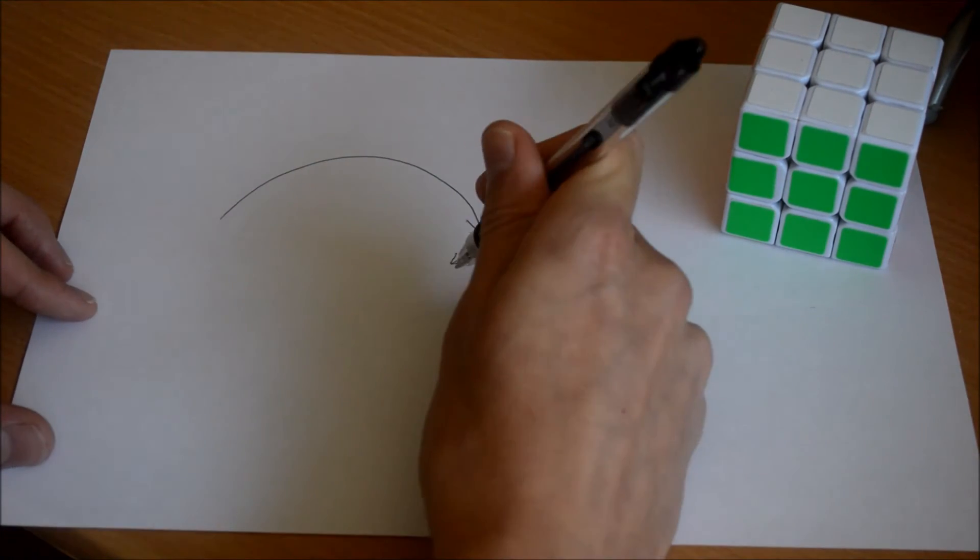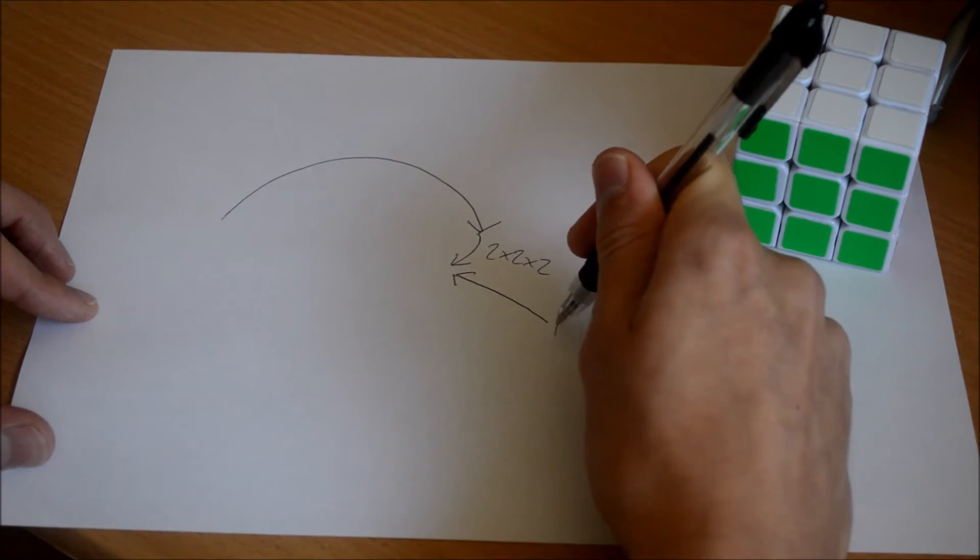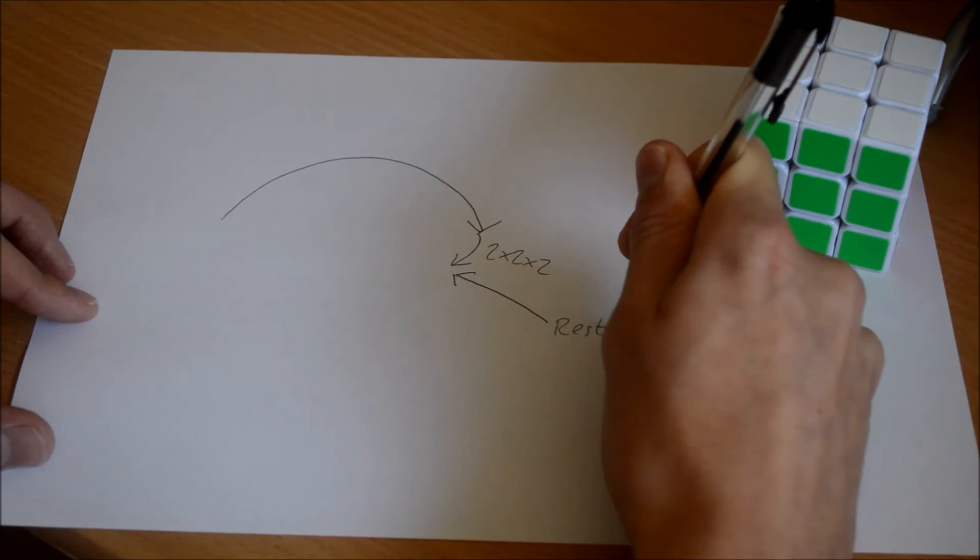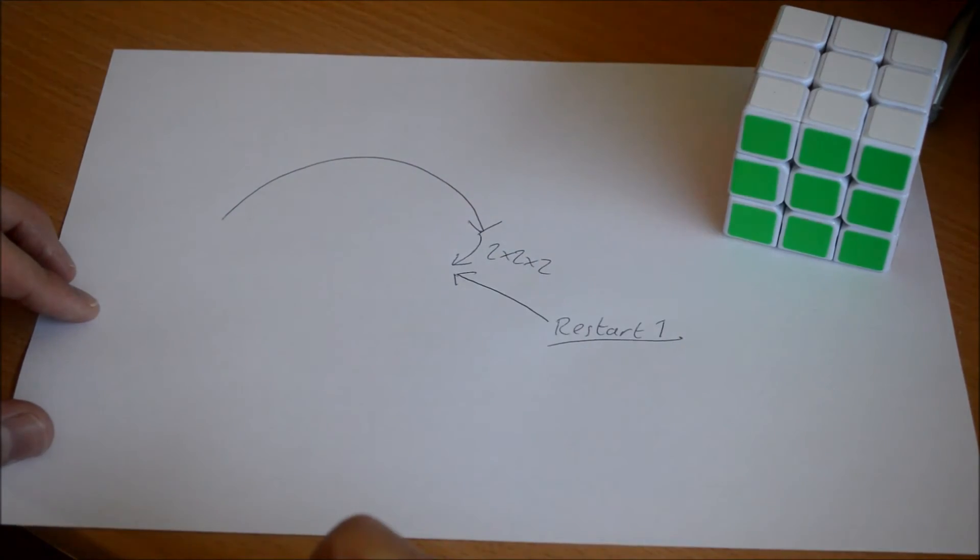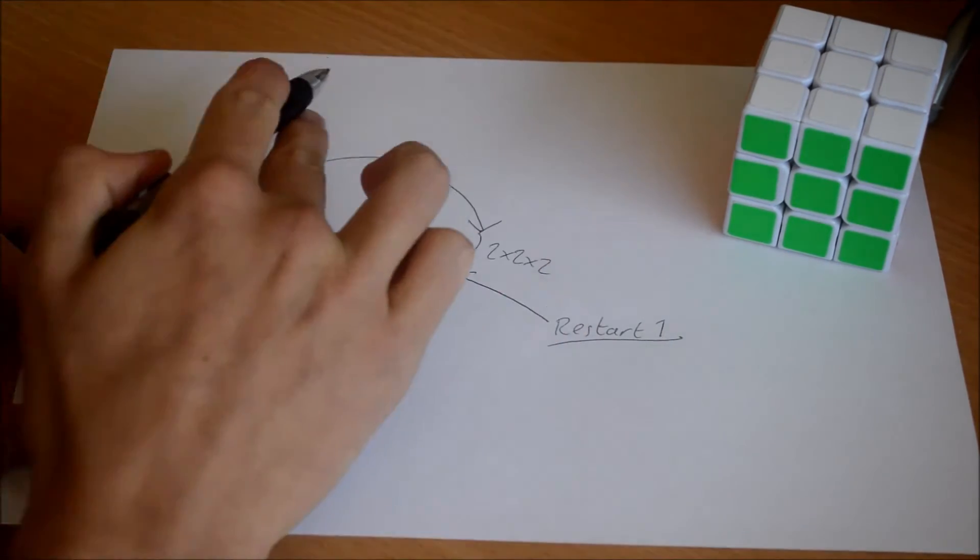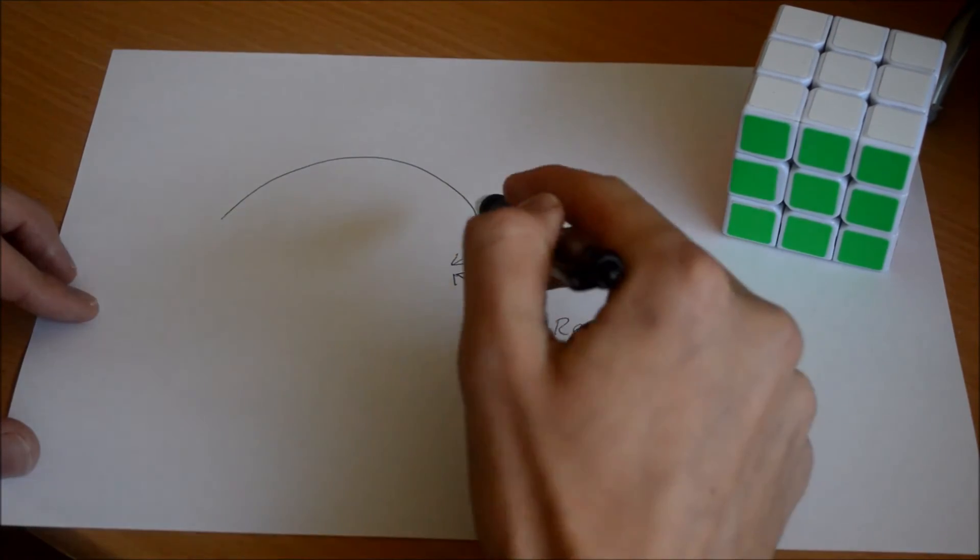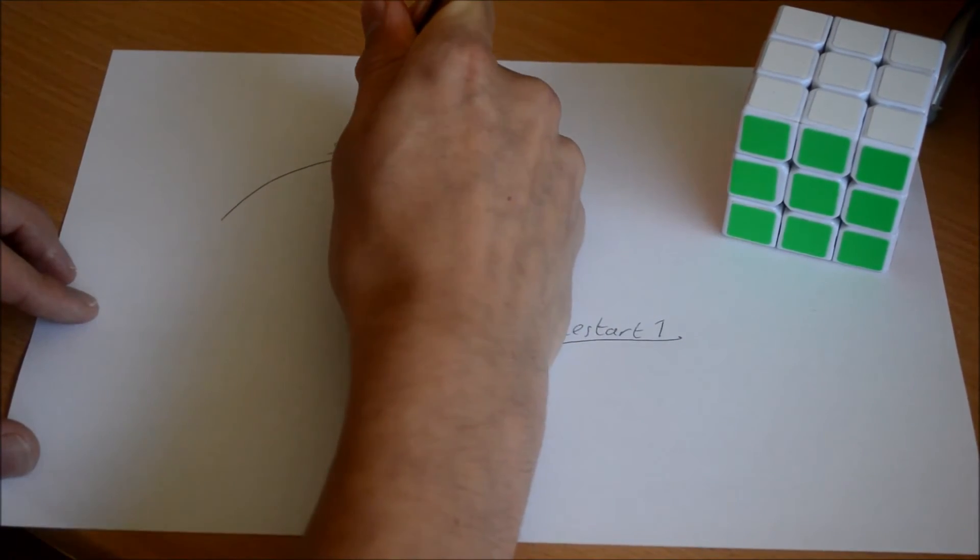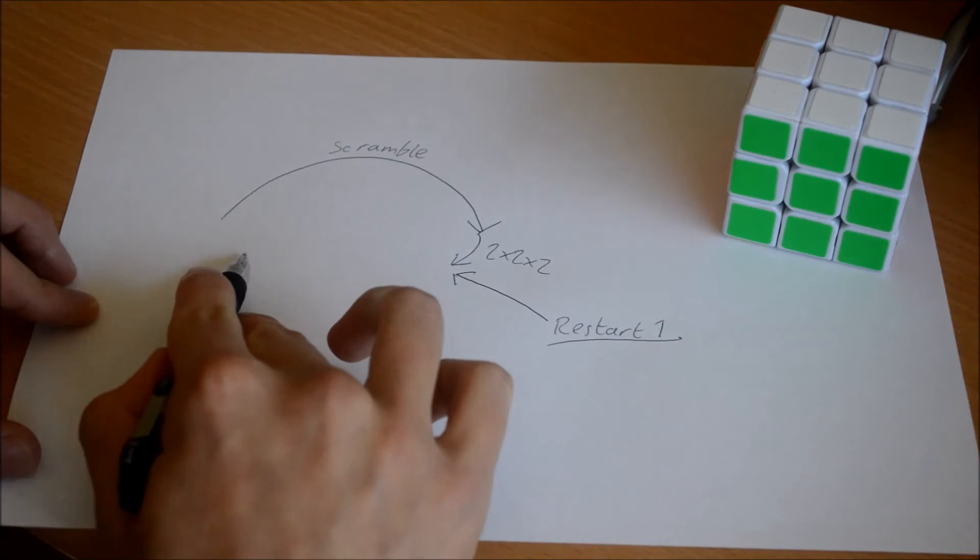So what you do, you jump in at this point here, call this restart 1, and then you do the inverse. So you do the inverse of your 2x2 block, then the inverse of the scramble, and then what you're looking for is the next logical step to start from here.